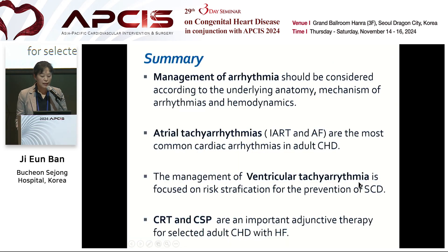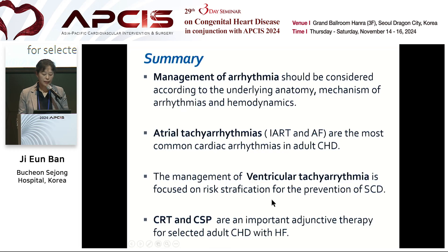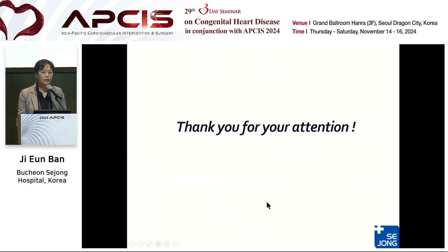In summary, management of arrhythmia should be considered according to underlying anatomy, prior surgical history, mechanism of arrhythmia, and hemodynamics. IART and AF are the most common cardiac arrhythmias in adult congenital heart disease. Management of ventricular tachyarrhythmia is focused on risk stratification for prevention of sudden cardiac death. CRT and conduction system pacing are important adjunctive therapies for selected adult congenital heart disease patients with heart failure. Thank you for your attention.